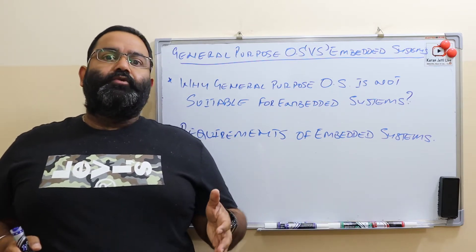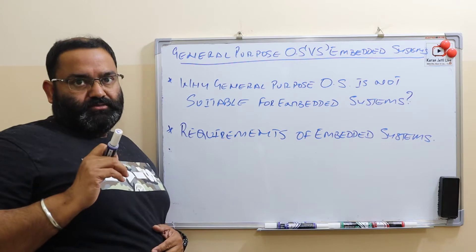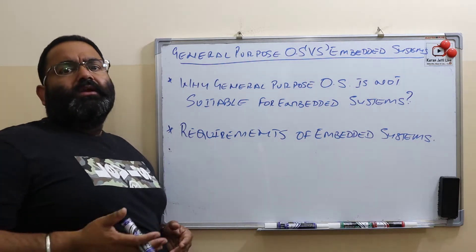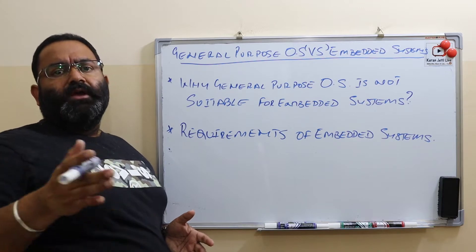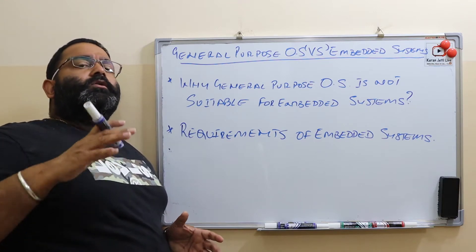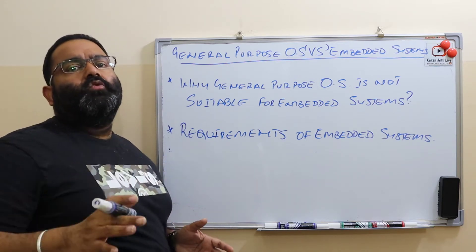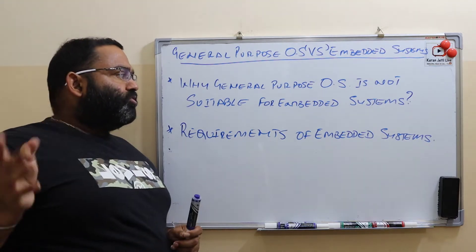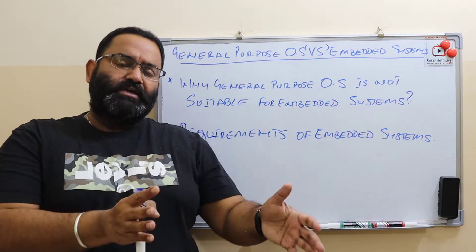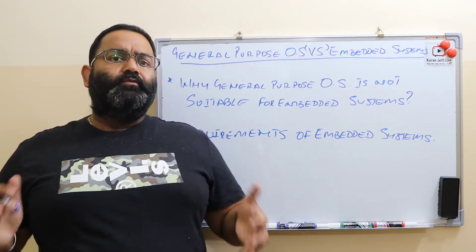In this video tutorial we are going to discuss two points: number one, why general purpose operating systems are not suitable for embedded systems — like Linux and Windows, which are general purpose and can run any type of application — and number two, what are the requirements of a hardcore embedded system.